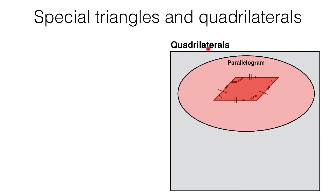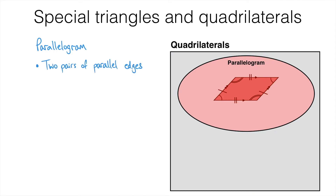Now we're looking at quadrilaterals — shapes with four straight sides. The first quadrilateral we're going to look at is the parallelogram. Take a look at the diagram. We have a pair of parallel edges marked by the single arrow, and another pair of parallel edges marked by the double arrow. This is the defining feature of a parallelogram: two pairs of parallel edges. So if someone tells you that you've got a quadrilateral with two pairs of parallel edges, that is enough information to tell you you've got a parallelogram.